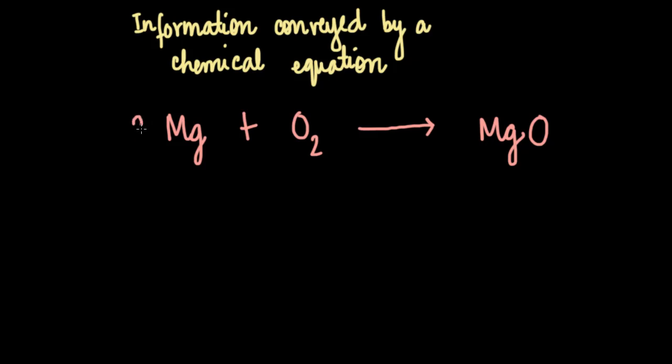So there are two magnesium atoms on the left and two on the right, two oxygen atoms on the left and two on the right. We'll see how to balance a chemical equation in the next video.